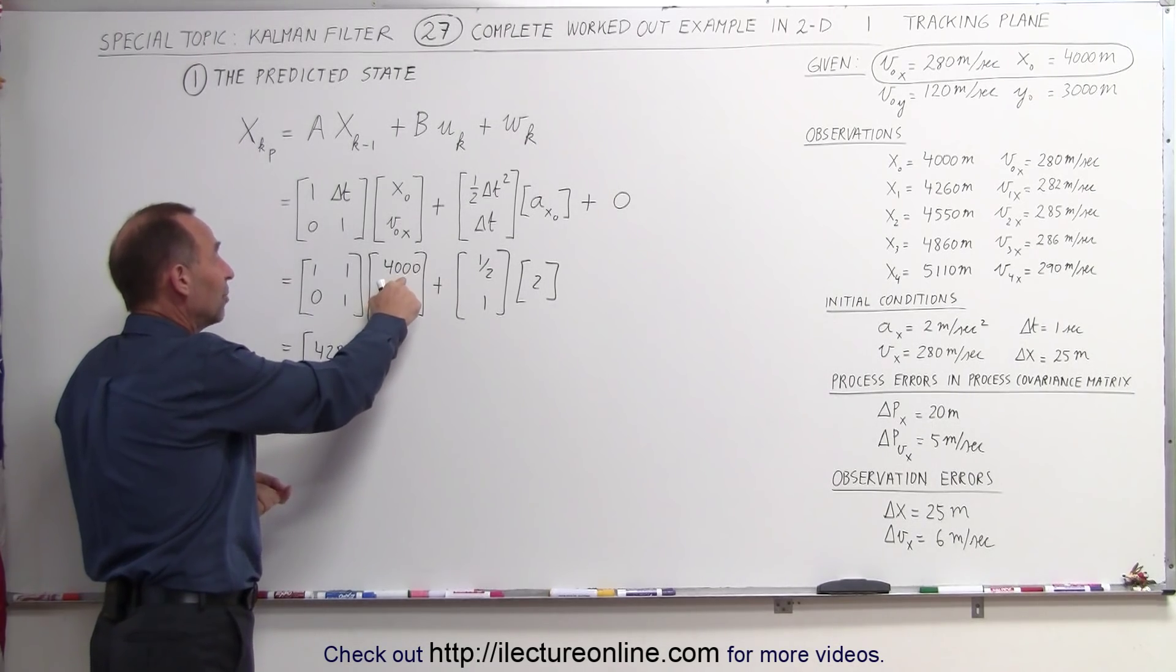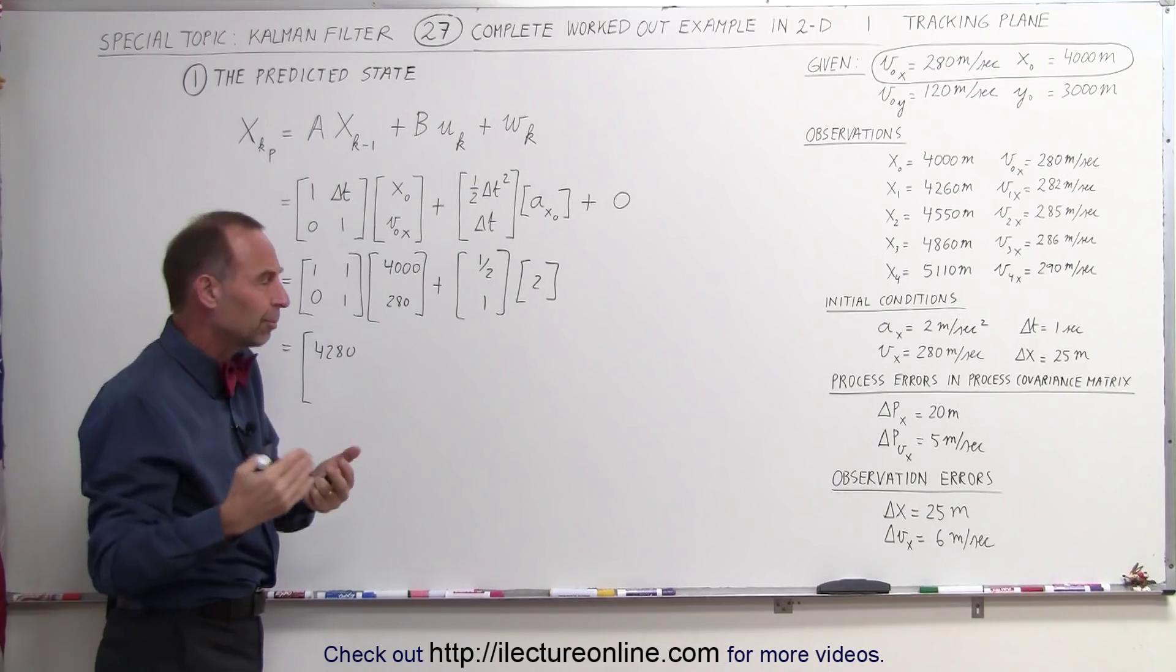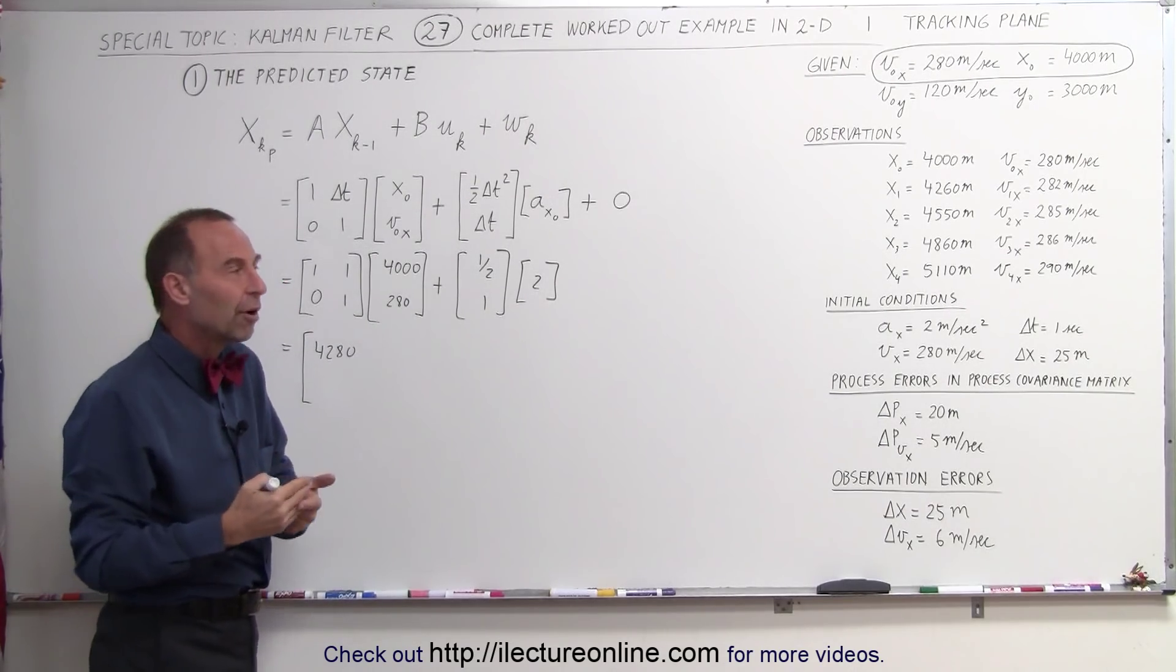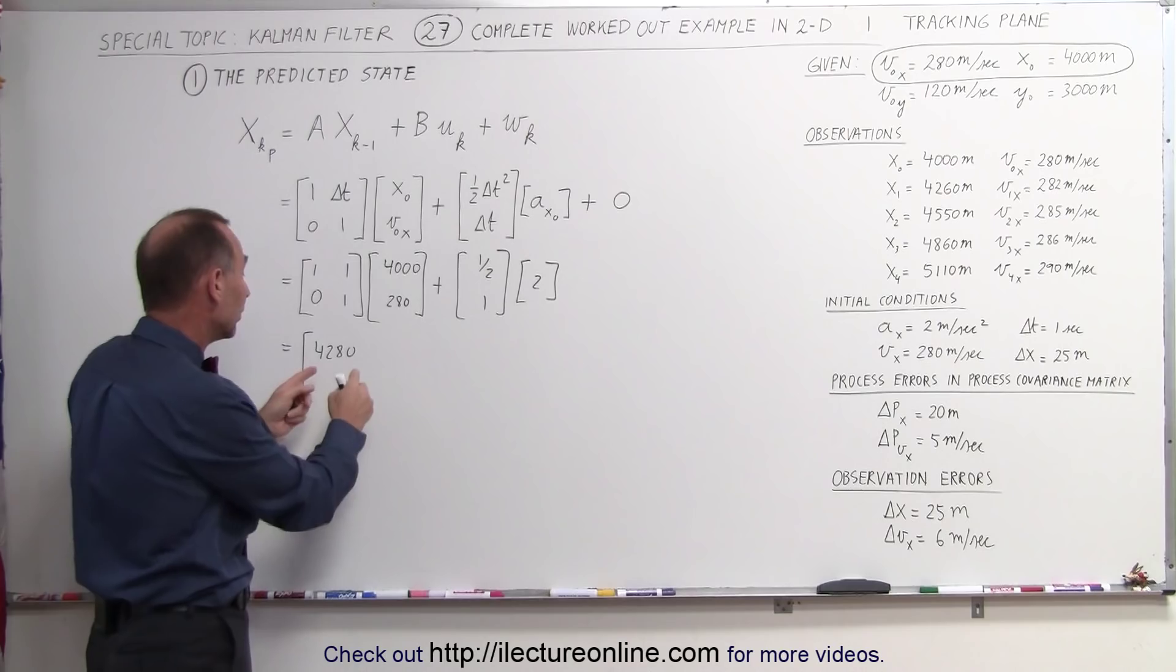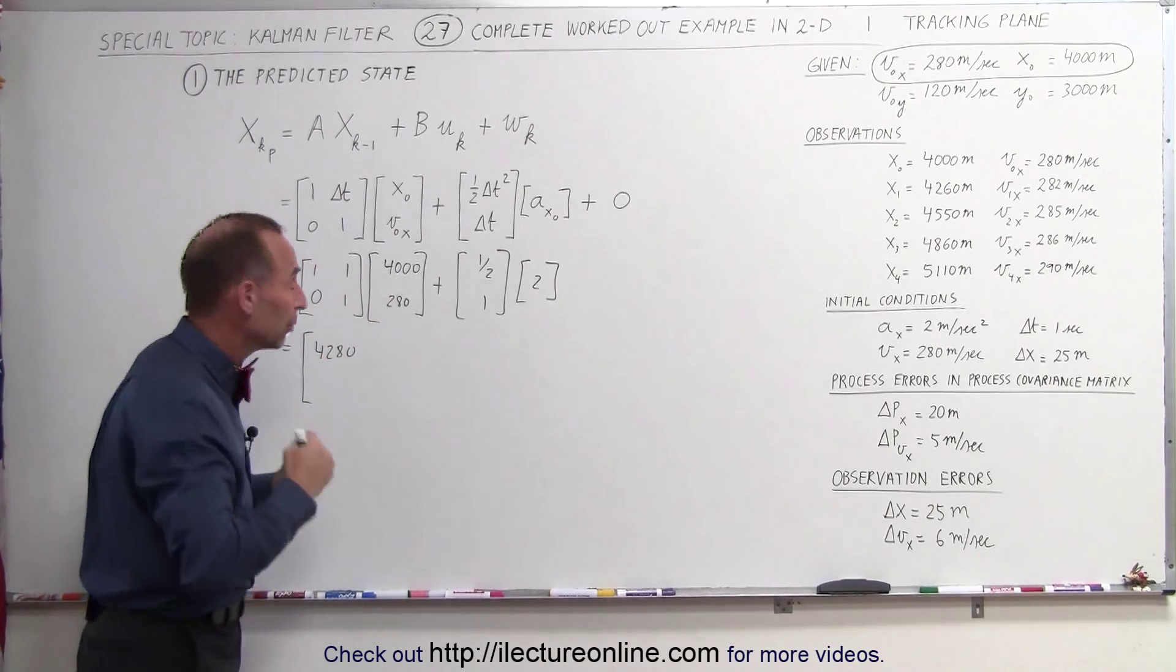If the plane is at 4,000 meters, it's moving at 280 meters per second, then that would be the new predicted position. Of course, depending upon all the errors that are involved and the new measurements we're making, that will not be the ultimate position we think the plane is at when we get to the Kalman filter process.